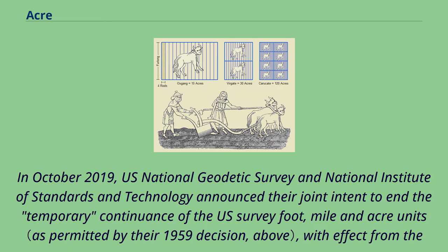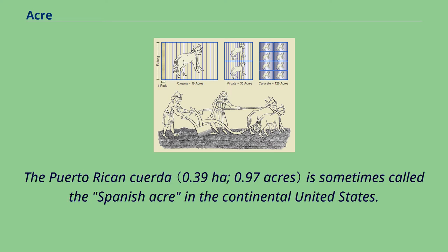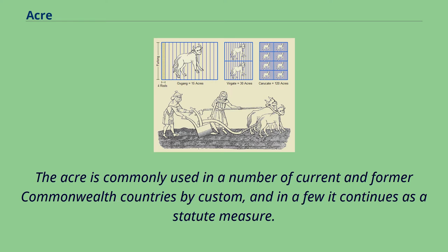The Puerto Rican Cuerda is sometimes called the Spanish acre in the continental United States. The acre is commonly used in a number of current and former Commonwealth countries by custom, and in a few it continues as a statute measure.